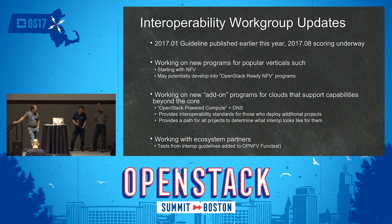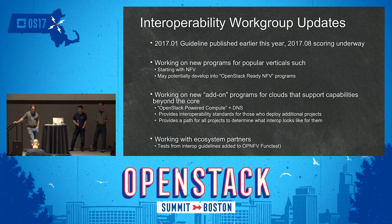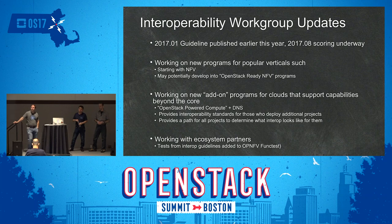Traditionally, the interoperability workgroup focused on core capabilities for almost all OpenStack clouds. But OpenStack is a flexible system finding interesting use cases and niches — one of which is NFV. We're looking at creating new programs for those verticals because an NFV cloud is built and behaves a little differently from a general-purpose compute cloud. There may be things like PCI pass-through, new hardware scheduling, advanced data plane performance, and other things like that.